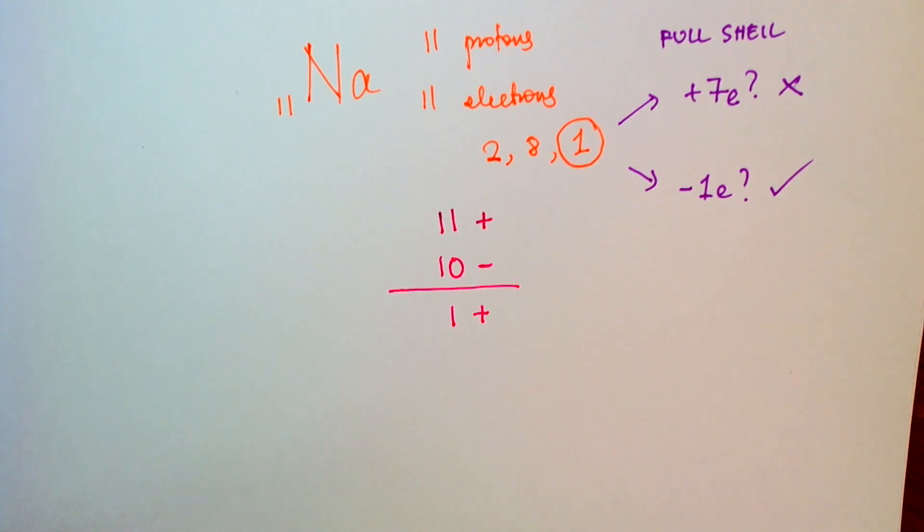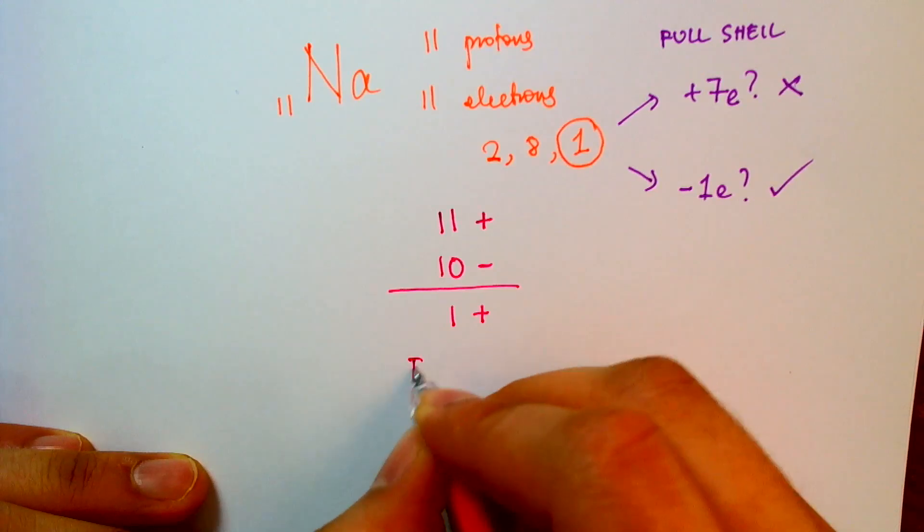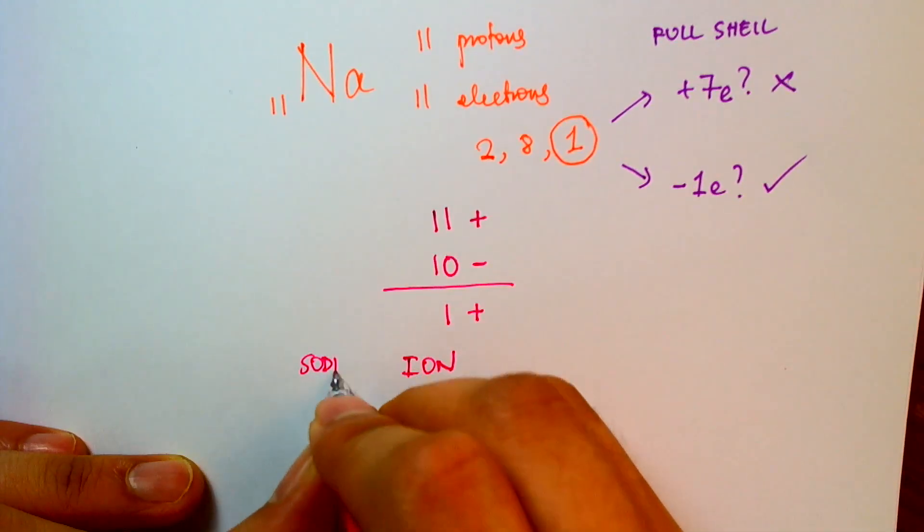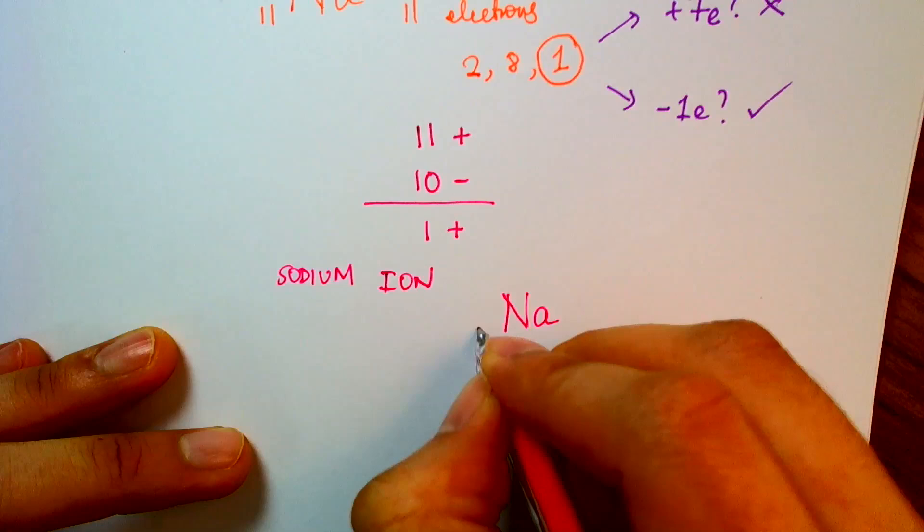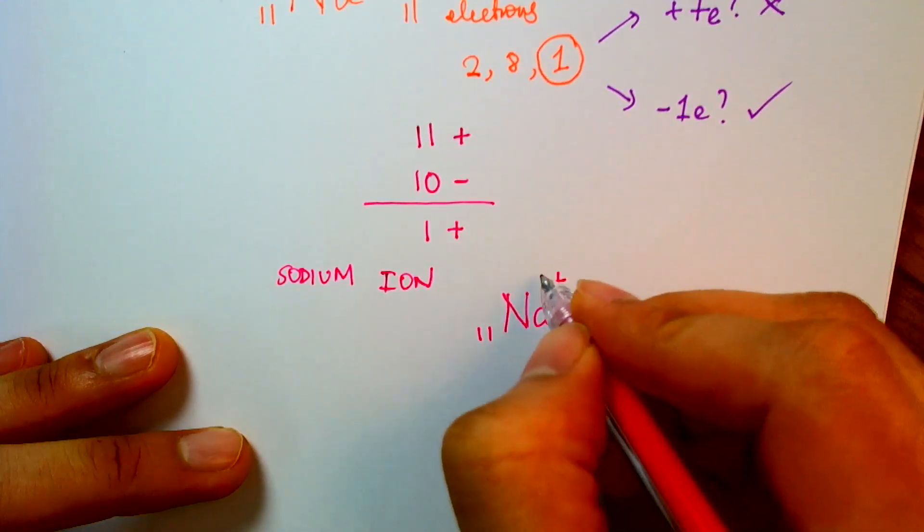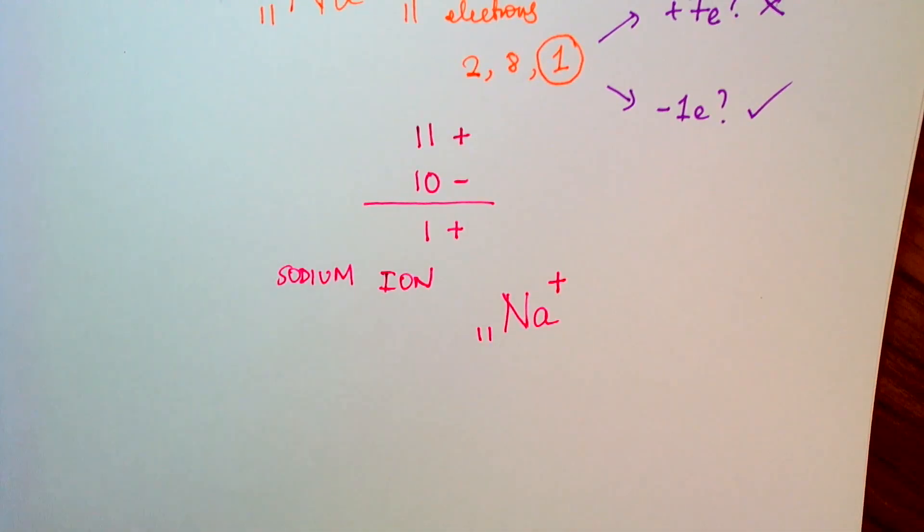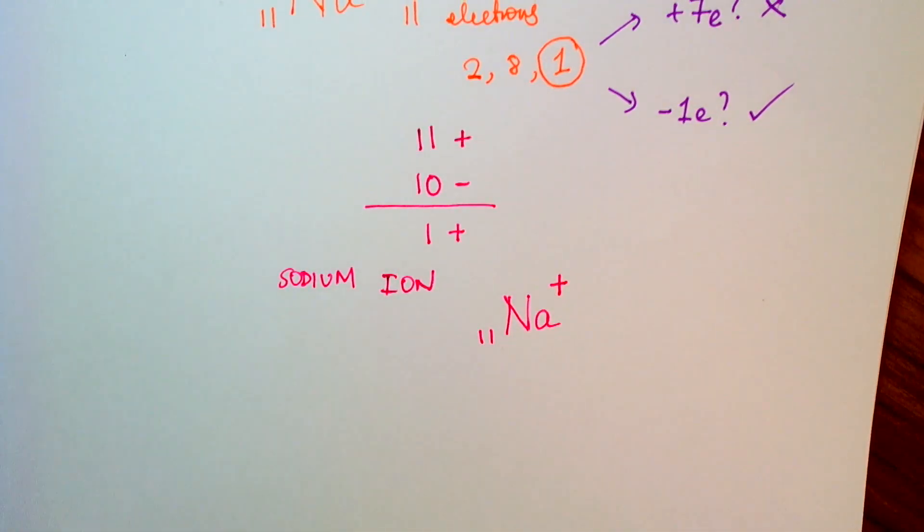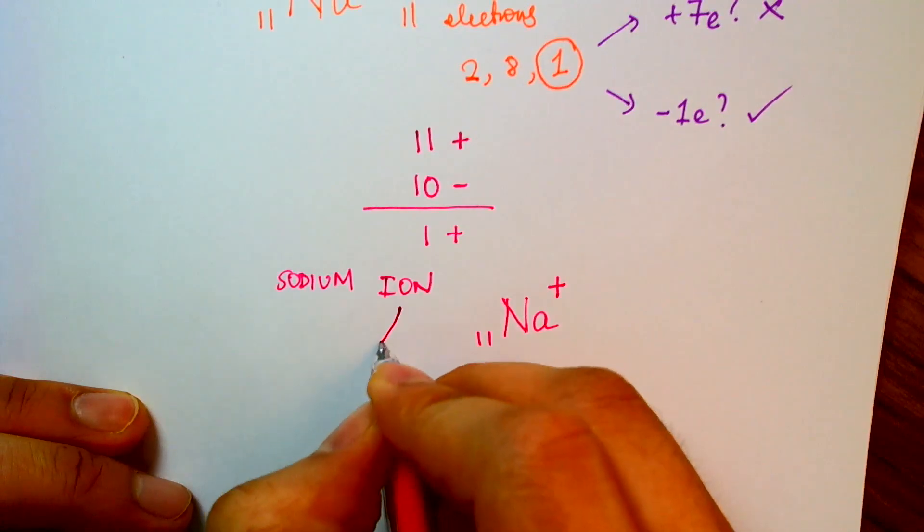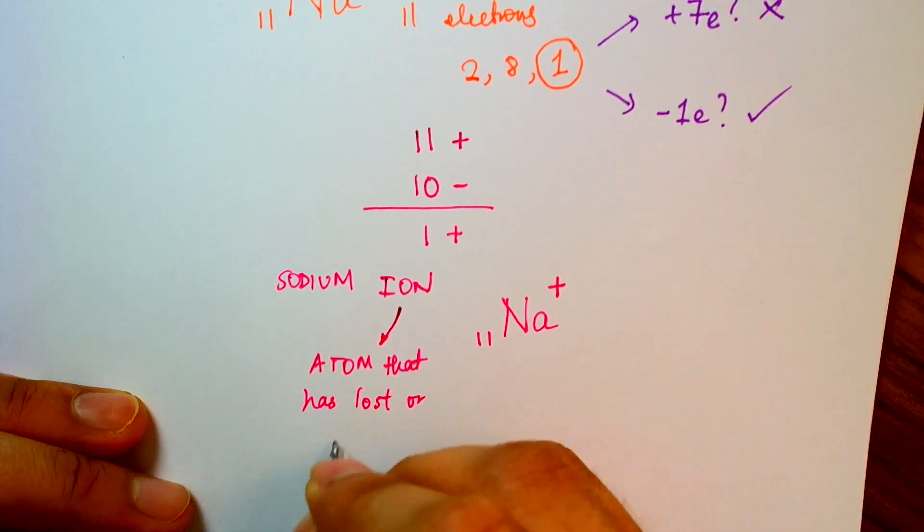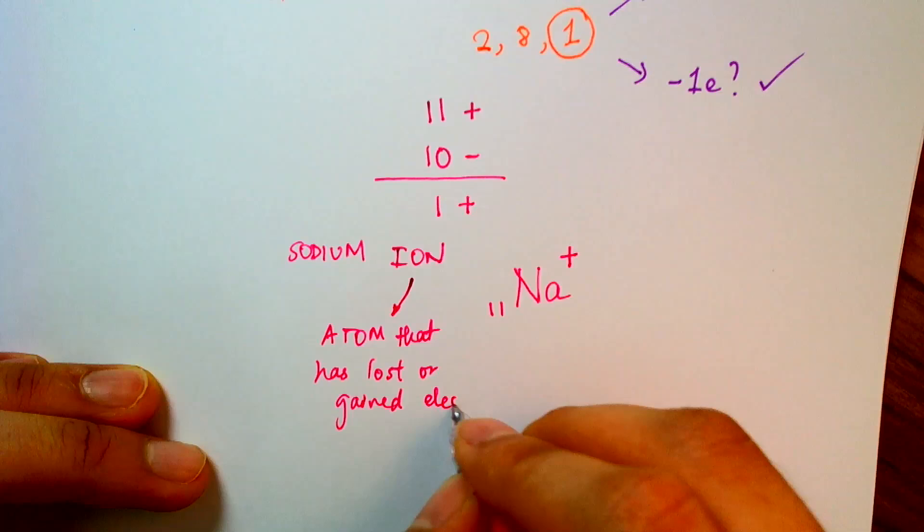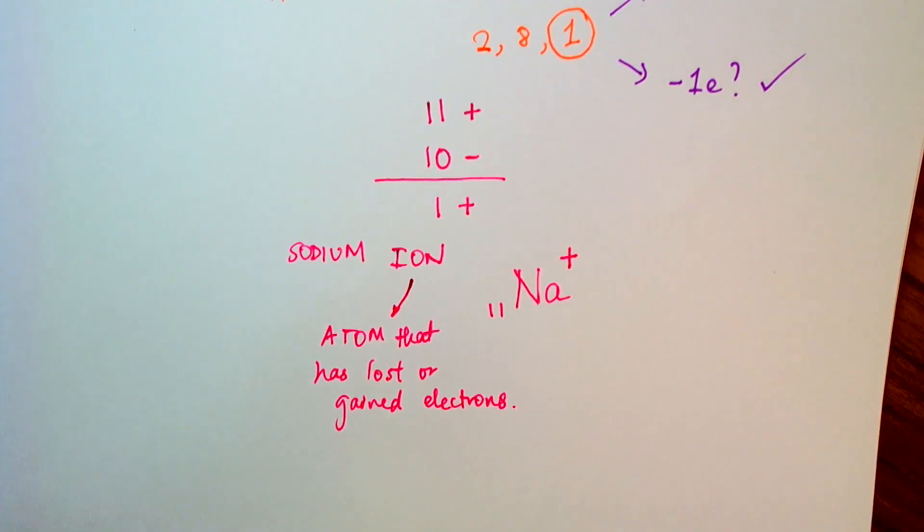Now, whenever an atom loses or gains electron, we call it an ion. So my sodium ion now has a plus charge of 1. And the way we denote that is by writing the sodium atom and then putting little plus on top. I could have put a 1 plus, but 1 is implicit when you write plus. It's only when you get 2, 3, or more that you actually write a number there to make it explicit. So an ion is basically an atom that has lost or gained electrons.